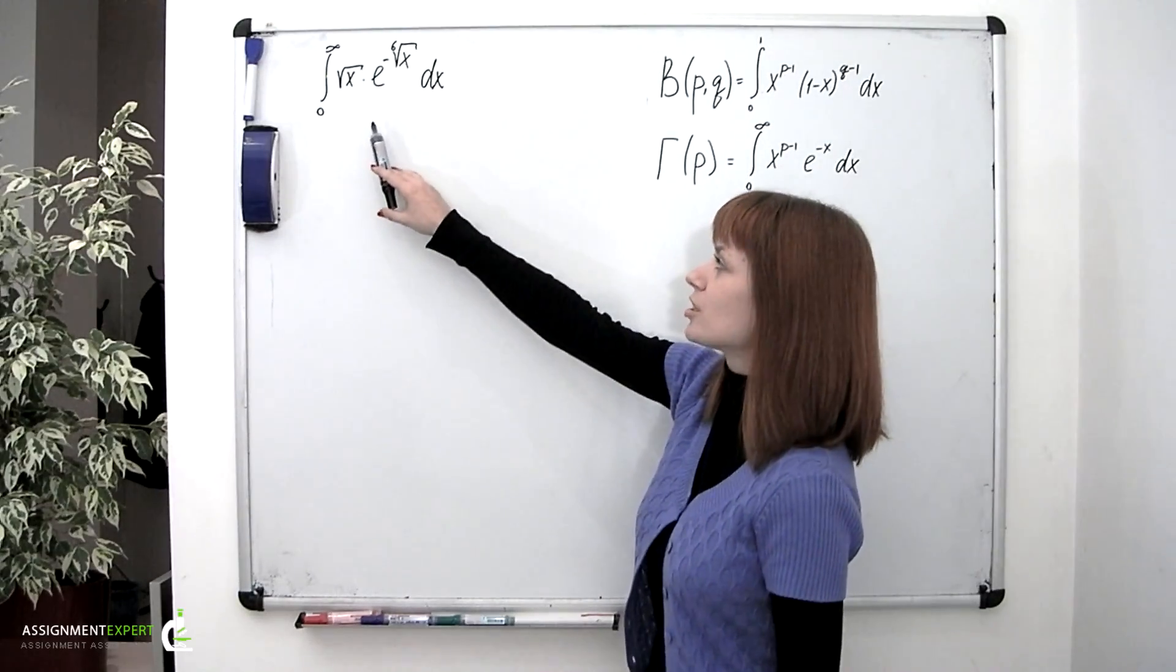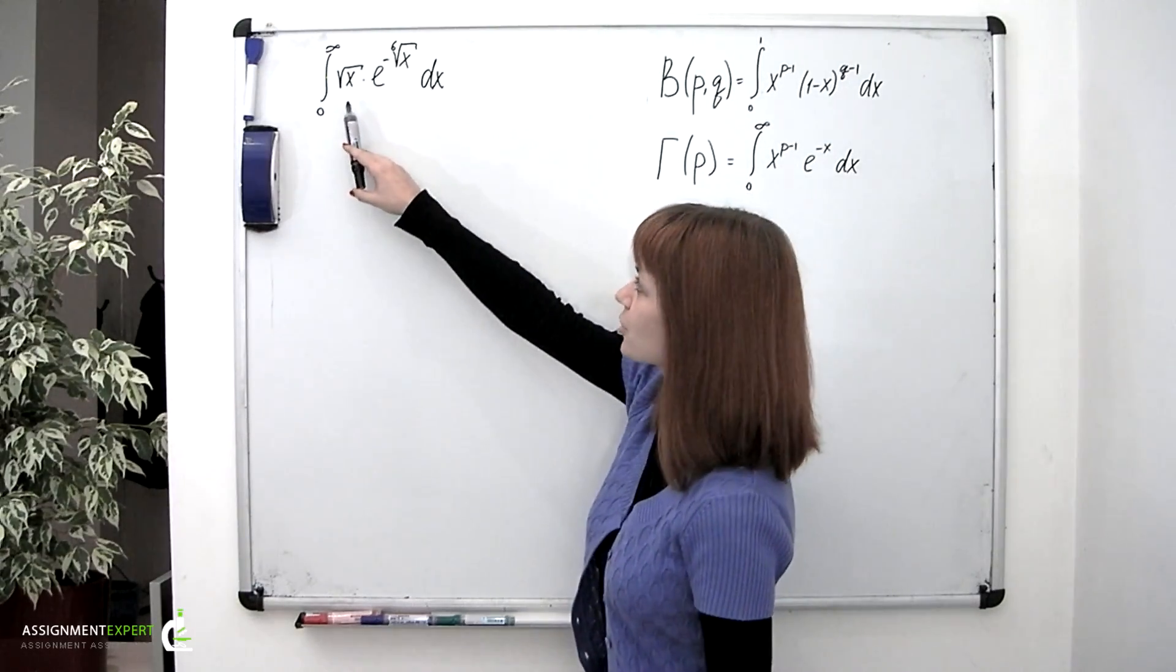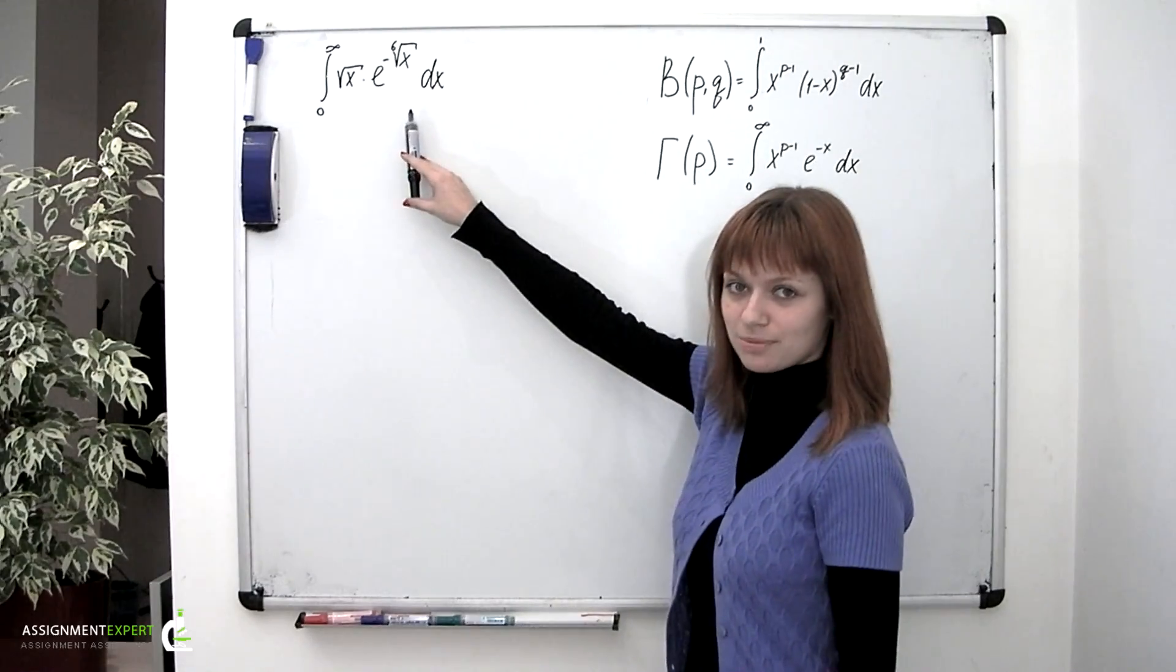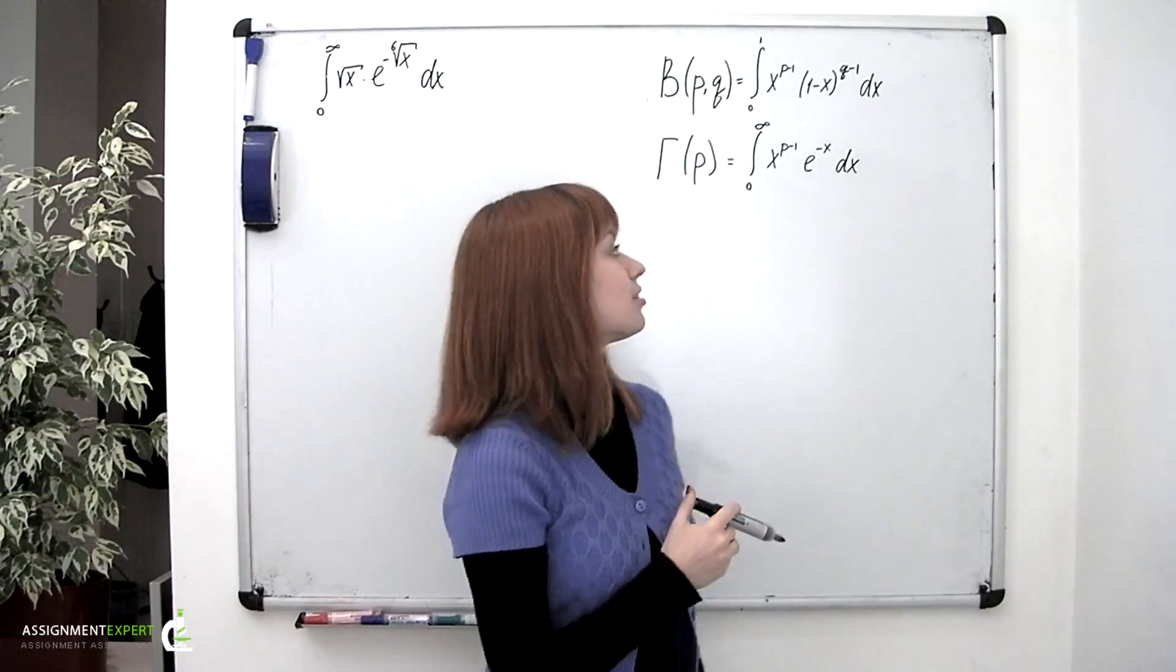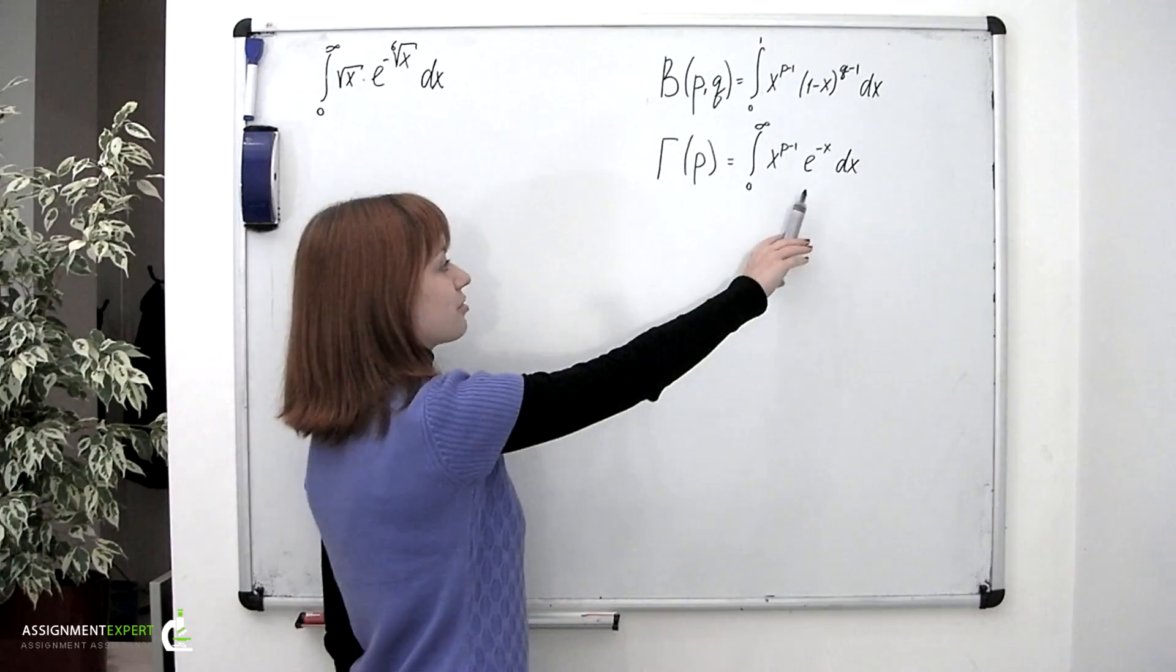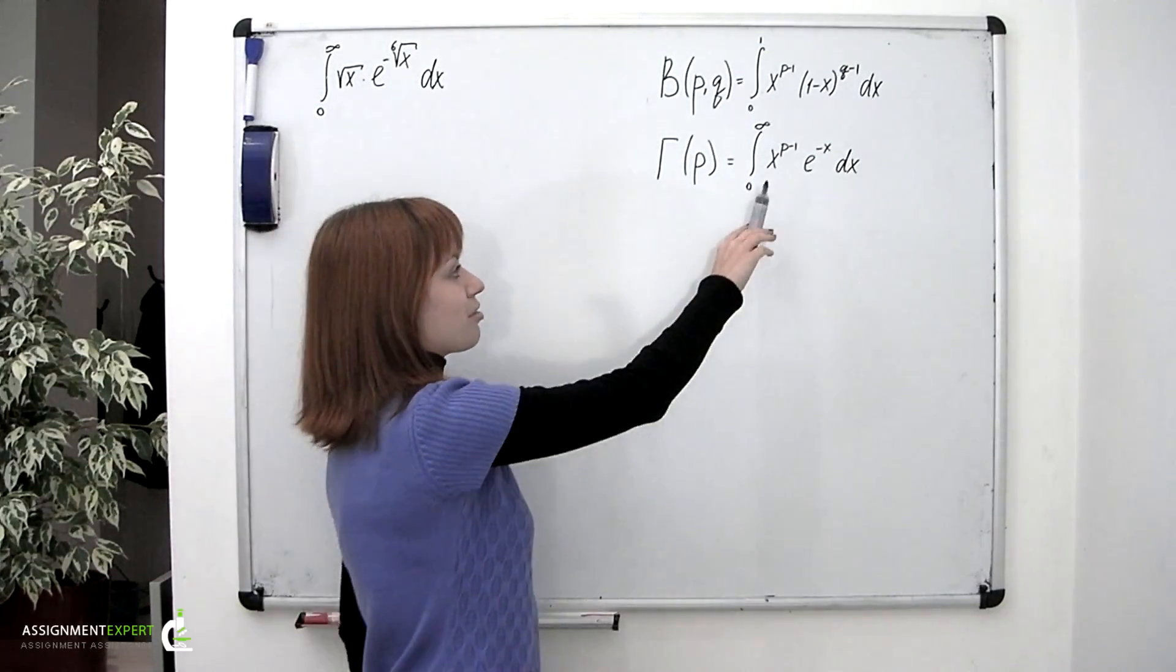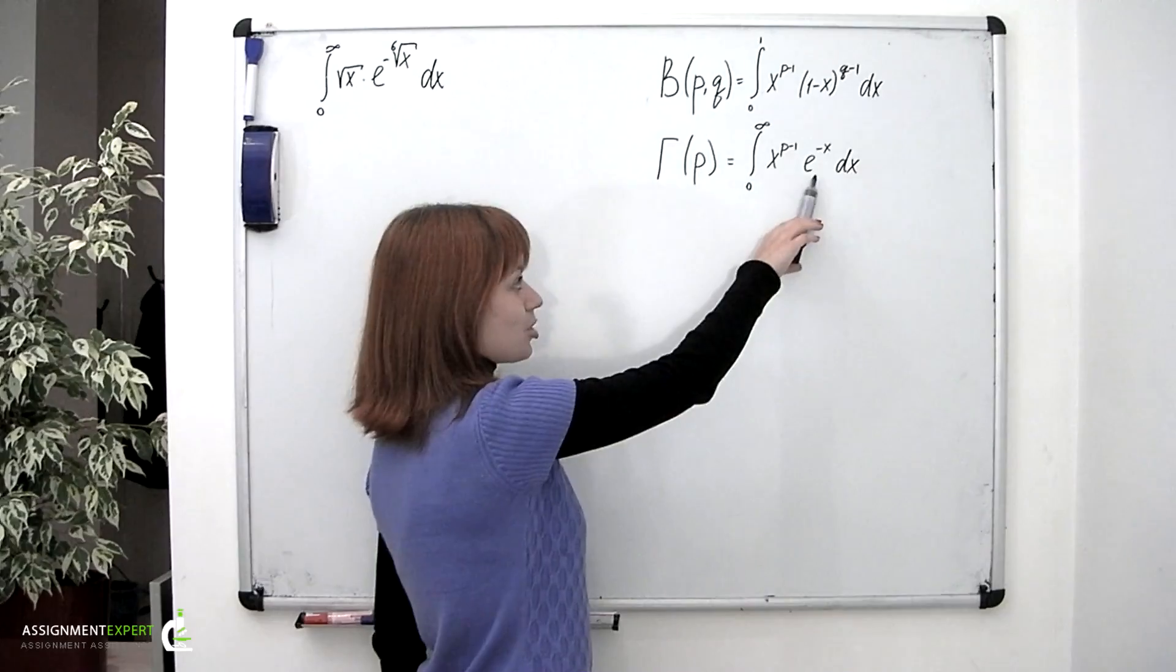The expression under the integral is a product of two functions, the power function and the exponential function. A similar structure is under the integral of gamma function. Here we also have a power function multiplied by the exponential function.